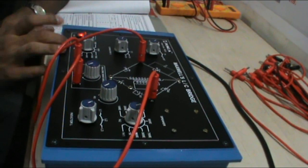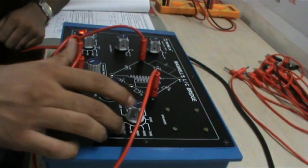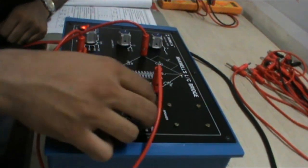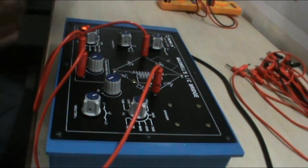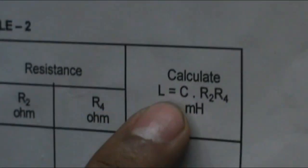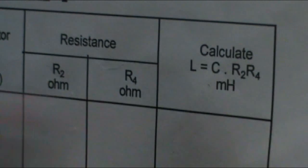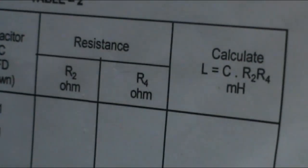Now at this position the volume is very less. So we calculate the readings: R4 as 700 ohm and R2 as approximately 500 ohm. Through this formula L equals C times R2 times R4, we can calculate the desired inductance. That's all in experiment 2.